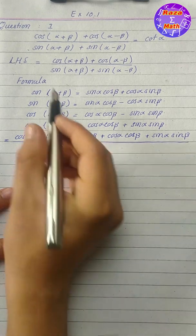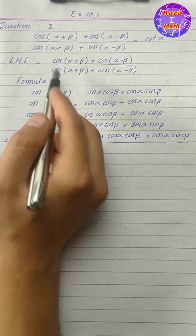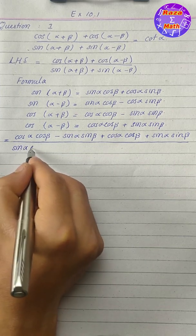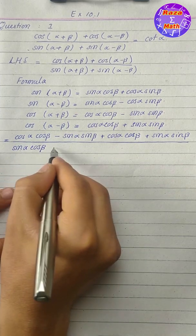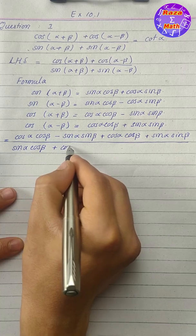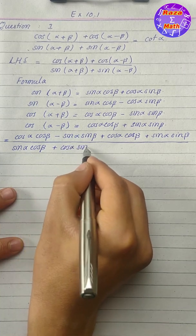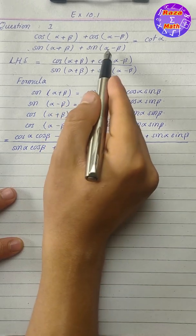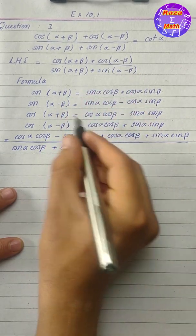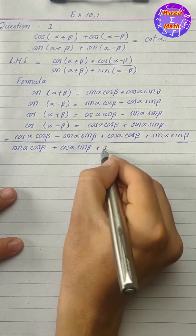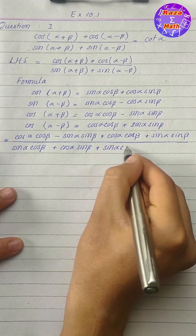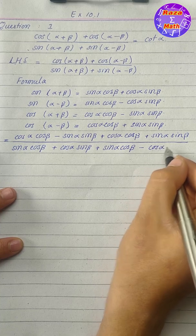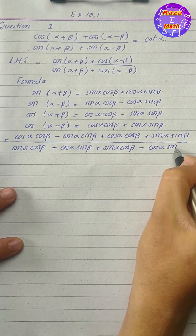For the denominator, sine of alpha plus beta gives us sine alpha cosine beta plus cosine alpha sine beta, and sine of alpha minus beta gives us sine alpha cosine beta minus cosine alpha sine beta.